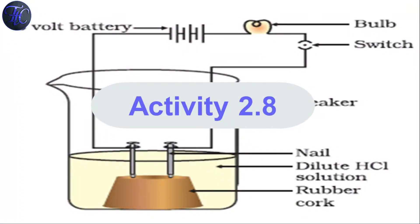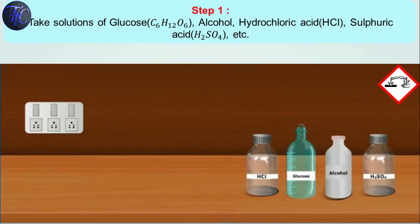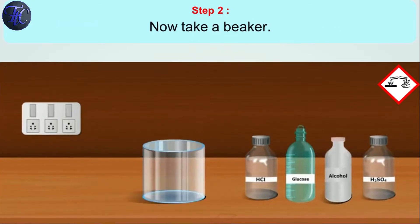Activity 2.8. Apparatus required: hydrochloric acid solution, glucose solution, alcohol solution, H₂SO₄ solution, beaker, rubber cork, nails, wire, switch, battery, and a bulb. Step 1: Take solutions of glucose (C₆H₁₂O₆), alcohol, hydrochloric acid (HCl), and sulfuric acid (H₂SO₄).